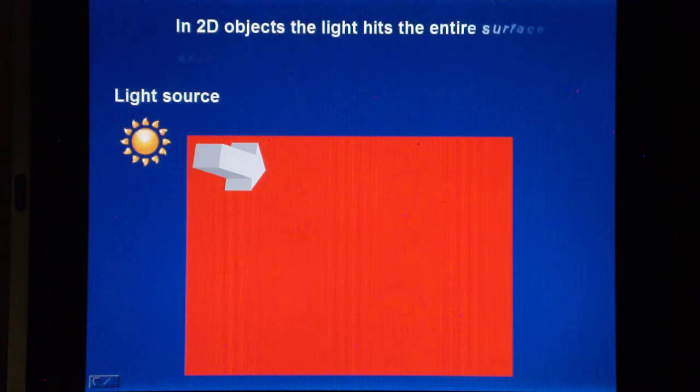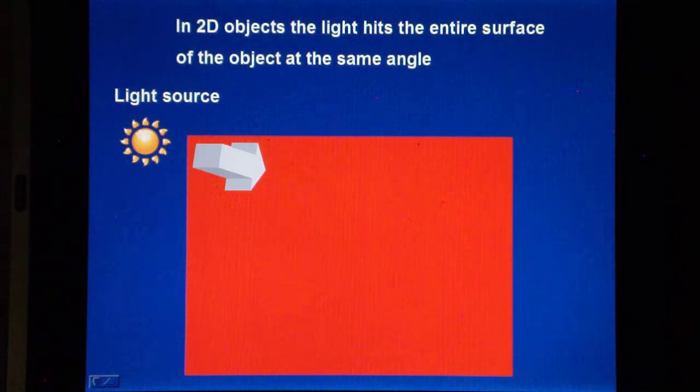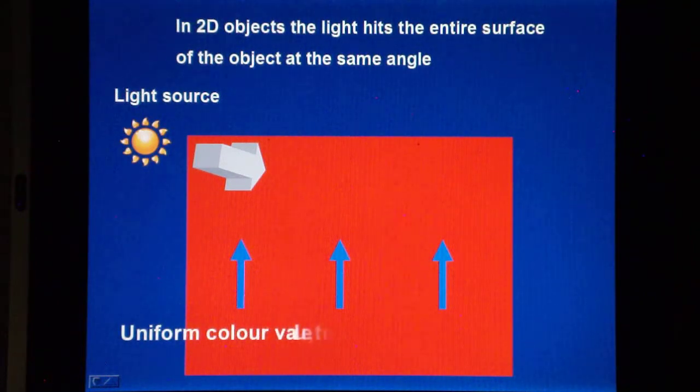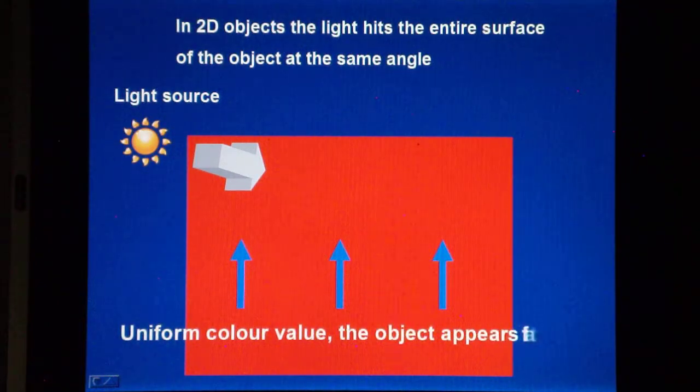In a two-dimensional object, such as a board or a wall, the angle that the light hits the object is the same throughout the surface, and provided the light is of sufficient intensity, the color value is uniform across the entire surface. As a result, the object appears two-dimensional, in other words, flat.